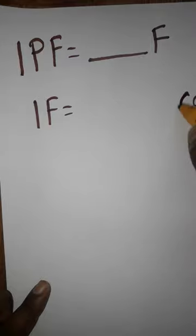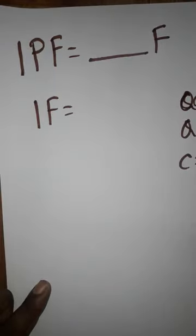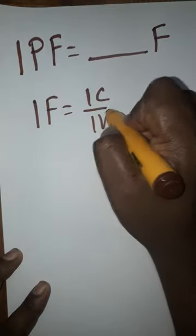One farad is equal to... Q is equal to CV. C is equal to Q divided by V, which equals one coulomb divided by one volt.